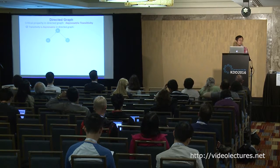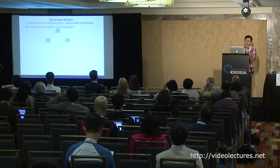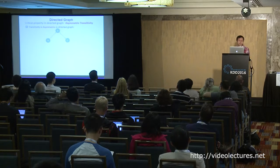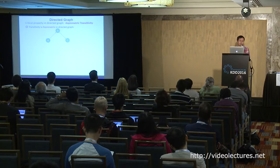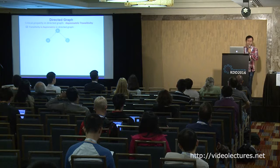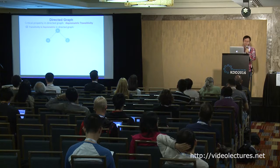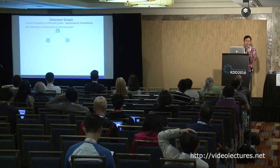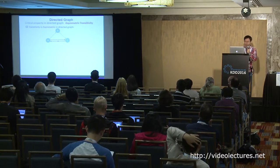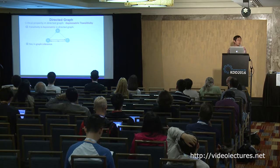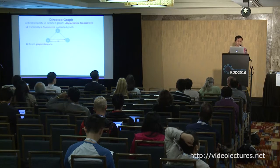Directed graphs are a very common and popular kind of data. For example, in Twitter the follow relation is directed. We find that one critical property in directed graphs is called asymmetric transitivity. Transitivity is asymmetric in directed graphs — it means if there is a directed edge from A to B and from B to C, then there is probably a directed edge from A to C, but not from C to A. This is important in capturing the unique structure of directed graphs and is especially useful in graph inference.